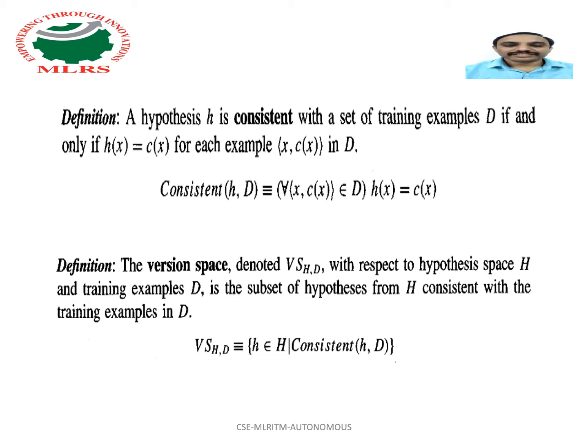A hypothesis is consistent with respect to all training examples if and only if H of X equals C of X for each example X, C of X in all training examples D. Here, X is instance and C of X is target value.